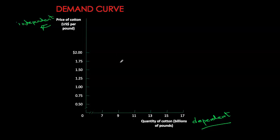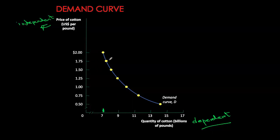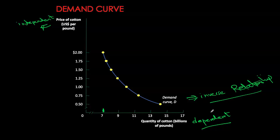We'll use the same information from the demand schedule to plot these coordinate points. At any given price we have the corresponding quantity demanded on the x-axis, so we get a set of coordinate points. If we connect the coordinate points we get our demand curve, which is a downward sloping curve reflecting that inverse relationship between the two variables.